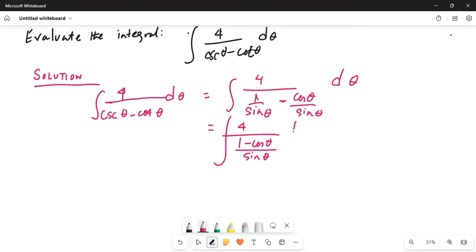4 divided by 1 minus cosine theta over sine theta, which is 4 over sine theta. So this can be written as the integration of 4 sine theta divided by 1 minus cosine theta d theta.